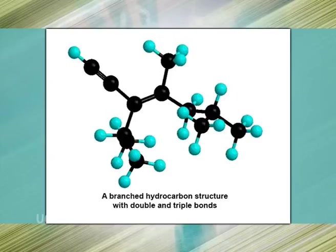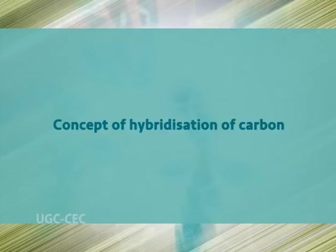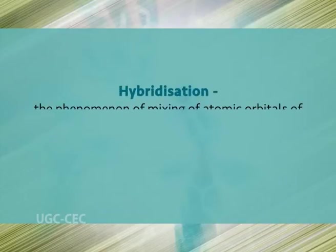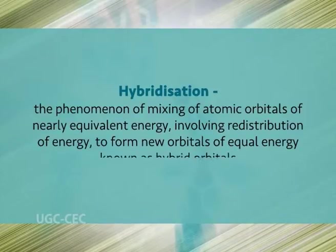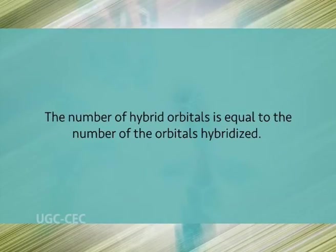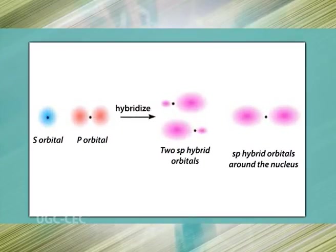For example, the combination of hydrogen with carbon affords a remarkable variety of hydrocarbons. Hybridization may be defined as a phenomenon of mixing of atomic orbitals of nearly equivalent energy, involving redistribution of energy to form new orbitals of equal energy known as hybrid orbitals. The number of hybrid orbitals is equal to the number of orbitals hybridized, and the properties of hybrid orbitals are in between those of the original orbitals.